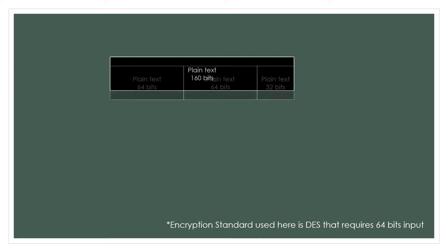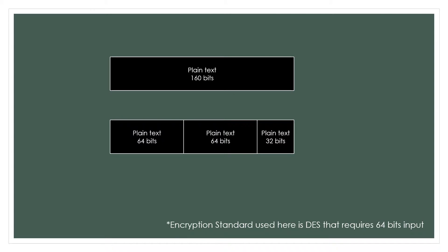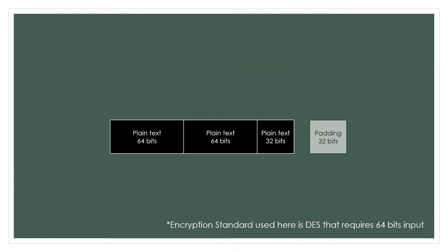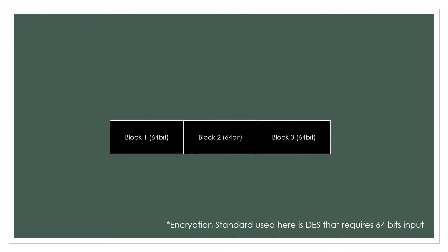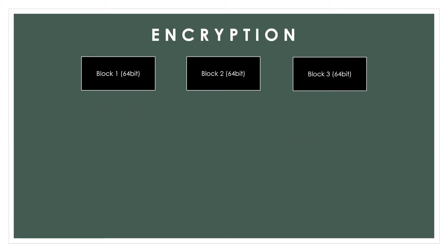Hence, the plain text is split into three blocks, with the first two blocks having a size of 64 bits and the last block being 32 bits. This requires the last block to be padded with another 32 bits to fulfill 64 bits. This block is then treated like all the other blocks in the encryption process.